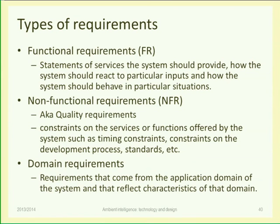Let's go back to the design process. Last class we discussed requirements. We saw that there are two types of requirements in a software system: functional requirements and non-functional requirements. Functional requirements list all the modes of operation of the system — all the different things the system can do, all the functions and items the user can see and choose to use. Some functional requirements may not be directly user-visible but are things the system does internally.